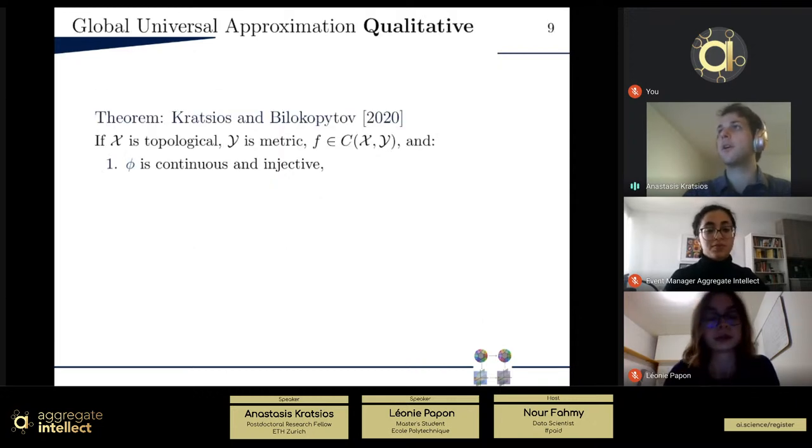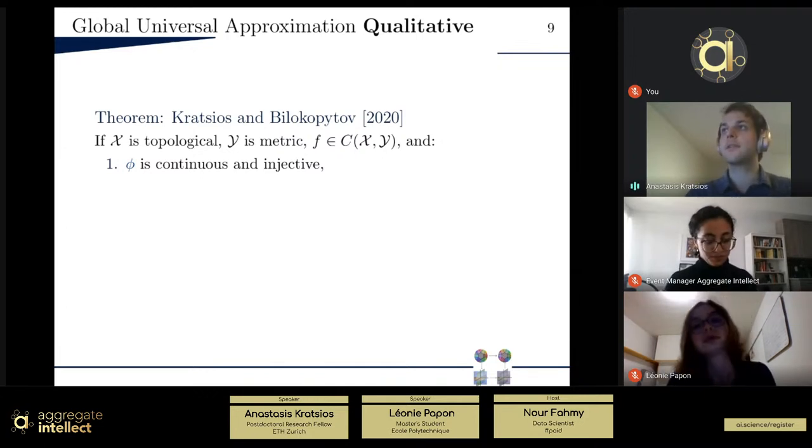So the last point is the non-Euclidean universal approximation theorem, the qualitative version. So if X is a topological space, Y is a metric space, so we should quantify this uniform notion of distance, and F is a function you want to learn, continuous. Then what do we need to make this problem make sense? And what conditions do we need on the feature map and the readout map?